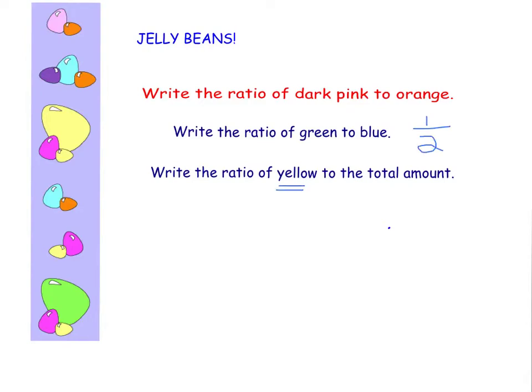So the ratio of green to blue jelly beans is one to two. What is the ratio of yellow to the total amount? So first we have to find yellow, one, two, three, four yellows, to the total number.